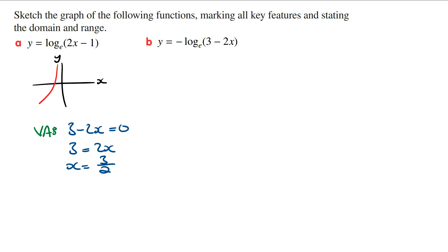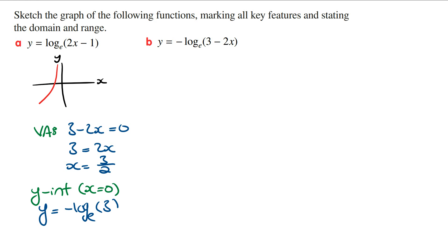Next we need to work out the x and y intercepts. Since x equals positive three halves is the vertical asymptote and the shape of the graph is going in the negative x direction, there is going to be a y intercept. To find the y intercept, we let x equal 0 and solve for y. So y equals minus log_e(3 minus 0), which is minus log_e(3). The coordinates of the y intercept are (0, minus log_e(3)).